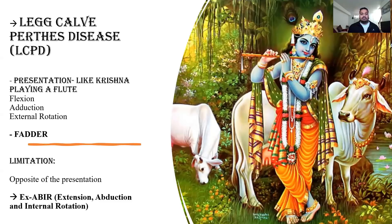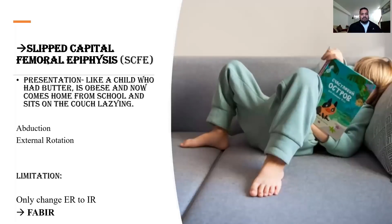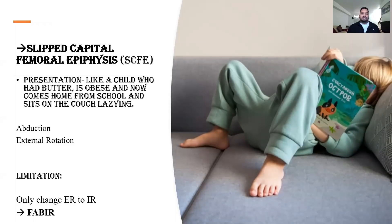What is Krishna's favorite food? Krishna loves butter. So when a child around age two to ten has a lot of butter, by the time they reach their teens they are going to be obese. From age 10 to 15 or 17, this child — who had too much butter — is now obese, comes home from school, and sits on the couch lazily. As you can see in the picture, the presentation is abduction and external rotation.